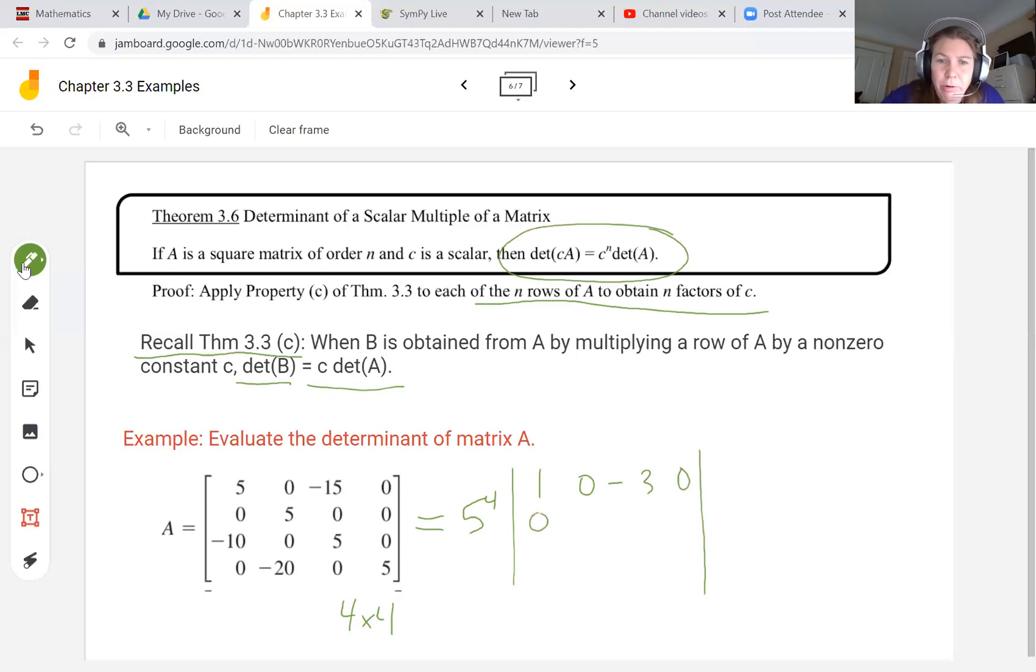This is the matrix inside that we're going to take the determinant of. The second row is 0, 1, 0, 0. Then we get negative 2, 0, 1, 0, and 0, negative 4, 0, and 1.